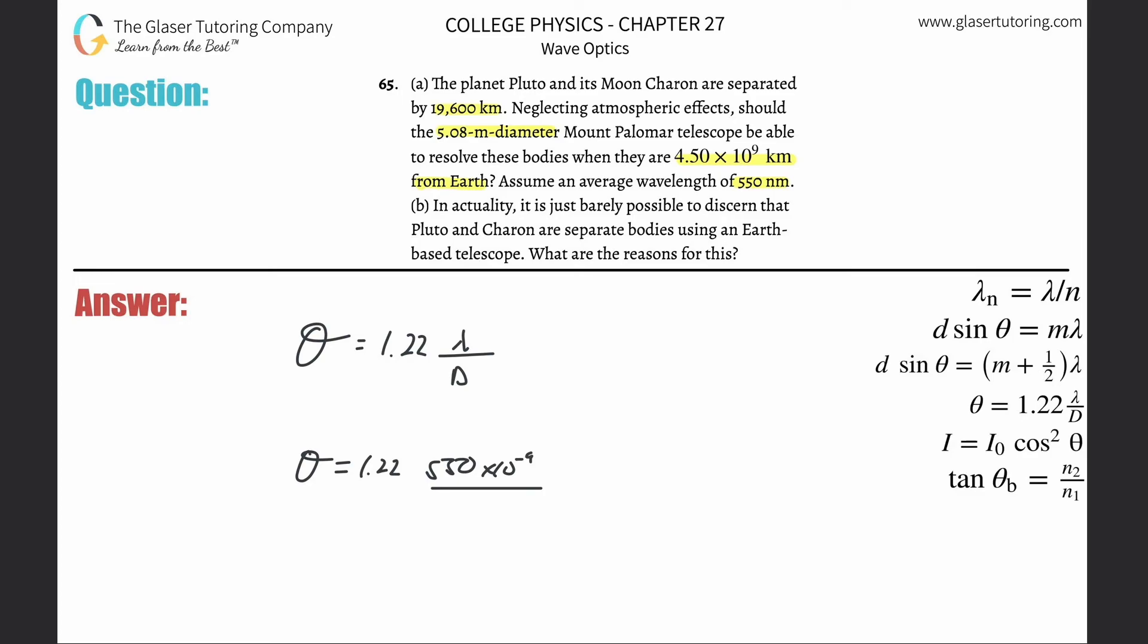550 times 10 to the minus 9 meters, divided by the diameter of the telescope that was already in meters, so that's great. So just plug and chug. 1.22 times 550 times 10 to the minus 9 divided by 5.08. And we get a value here of 1.32 times 10 to the minus 7 radians.